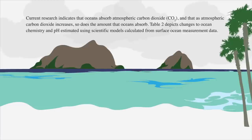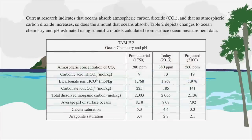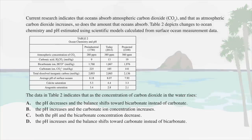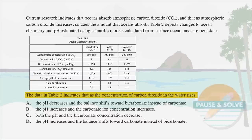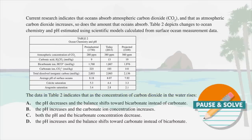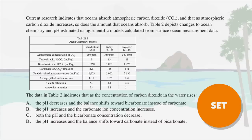Here's the question. Current research indicates that oceans absorb atmospheric carbon dioxide (CO2), and that as atmospheric carbon dioxide increases, so does the amount that oceans absorb. Table 2 depicts changes to ocean chemistry and pH estimated using scientific models calculated from surface ocean measurement data. The statement begins: the data in Table 2 indicates that as the concentration of carbon dioxide in the water rises — and the answer choices complete the sentence. Ready, set, pause.